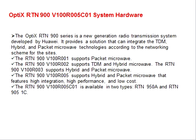We will start from RTN 900 v100 R001 and go up to v100 R005C01. First, what is the OptiX RTN 900 range? It is a solution that can integrate TDM, hybrid, and packet microwave technology. RTN 900 v100 R001 supports packet micro, v100 R002 supports TDM and hybrid micro, and v100 R003 supports hybrid and packet micro.